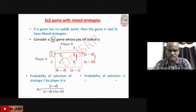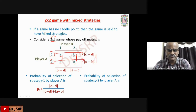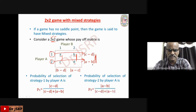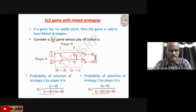The probability of selection of strategy 2 by player A: for this second strategy, the opposite value is |A − B|. So P2 equals |A − B| divided by |C − D| plus |A − B|. These are the probabilities of selection of strategies of player A.